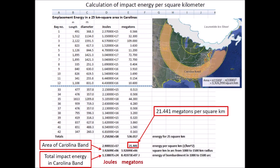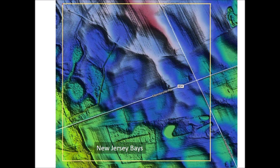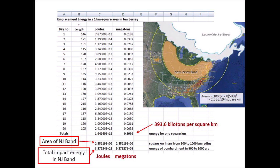Multiplying this number by the area of the Carolina band, we get a total impact energy of 1.1 times 10 to the 24th joules, or 8.4 times 10 to the 7th megatons. This number is in the range mentioned in Firestone's 2007 paper as capable of inflicting continent-wide damage. The impact energy in the one square kilometer area of New Jersey does not add up to one megaton — it is only 393.6 kilotons per square kilometer — but that is enough to kill all the megafauna and Clovis people in the area. The total impact energy in the New Jersey band is 927,327 megatons, which is only one hundredth of the energy in the Carolina band. We only need to use the energy of the Carolina band to calculate the size of the Younger Dryas impactor.